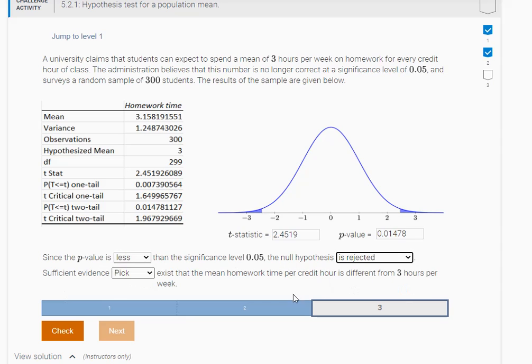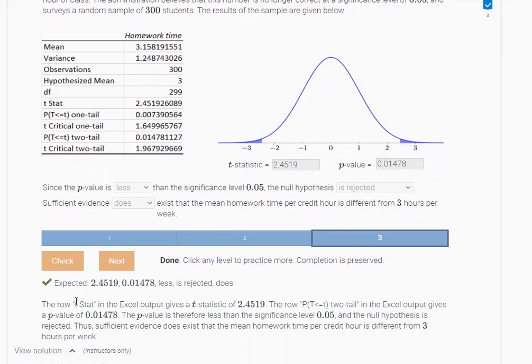The null hypothesis is rejected and what happens here, sufficient evidence does exist that the mean homework time per credit hour is different from three hours per week. And let's check to see how we did. And we got it.